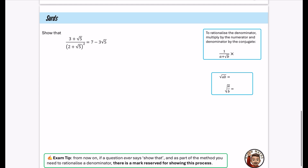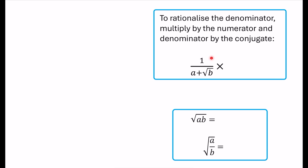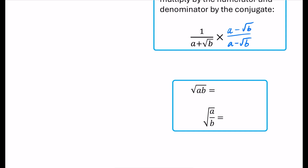Finishing with surds: to rationalize the denominator, you multiply the numerator and denominator by the conjugate of the denominator — in this case a minus the square root of b over a minus root b. This doesn't change the value since you're multiplying by one. Rationalizing means the denominator becomes a number without a surd. As a summary of surd laws: root of ab equals root a times root b, and root of a over b equals root a divided by root b. These laws can be used in both directions.